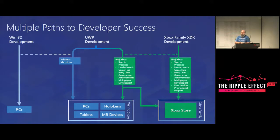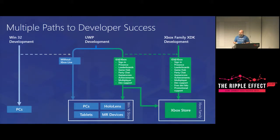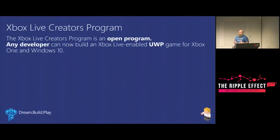UWP development allows you to publish to both, but through different programs. If you want to publish a UWP game today without doing any Xbox Live, you can publish to the whole Windows 10 Store — and that's not just PCs, but also tablets, mobile, HoloLens and our mixed reality devices. All of those share the same store and code base. You build once — for example in Unity, you build for UWP — and that targets every single UWP device. But if you wanted to build UWP games for Xbox, the only way was through the ID program, until now.